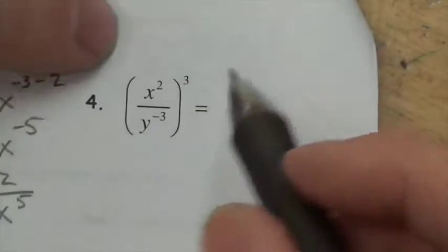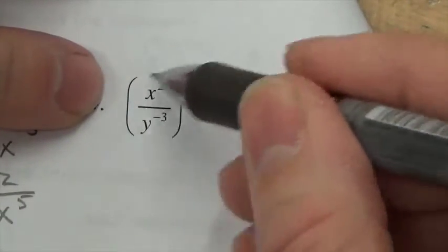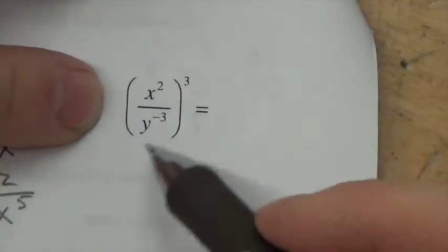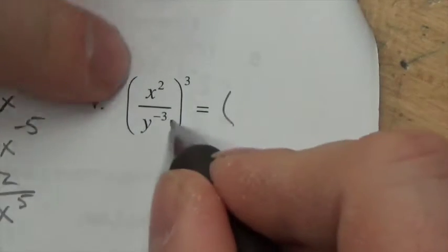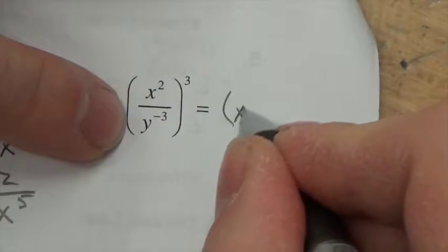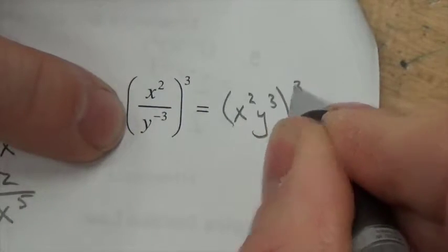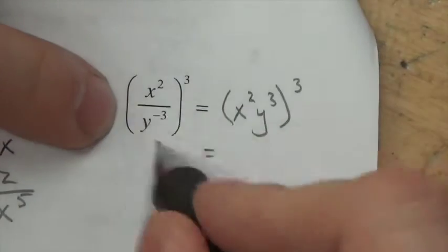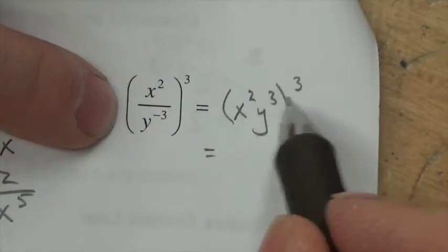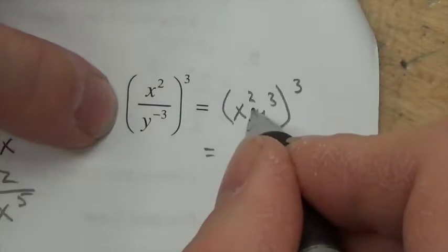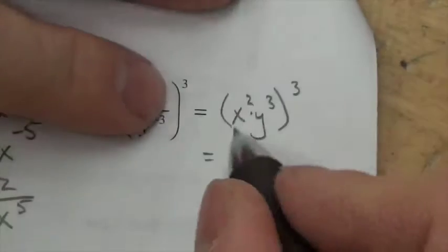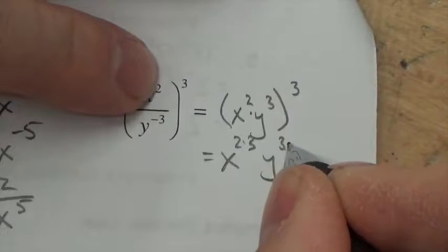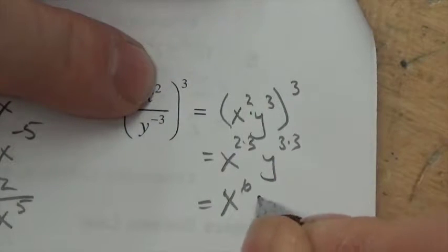For (x squared over y to the negative 3) cubed: first deal with what's inside the parentheses — that y to the negative 3 in the denominator has a negative exponent, so it moves up to the numerator. This becomes (x squared y cubed) cubed. Now the 3 distributes to both factors: x to the 2 times 3 and y to the 3 times 3, giving x to the sixth y to the ninth.